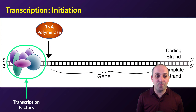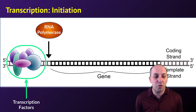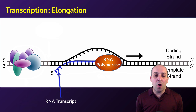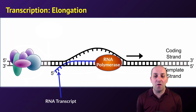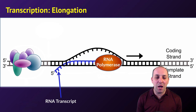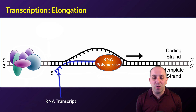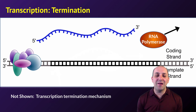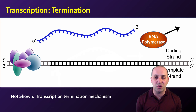Transcription happens in three phases. The first phase is known as initiation — transcription factors are present at the promoter and RNA polymerase attaches to them. During the elongation step, RNA polymerase moves along the gene and produces an RNA transcript that is complementary in sequence to the template strand of the DNA molecule. Just like in DNA replication, the new nucleotide strand has to be made in the five prime to three prime direction, meaning the template strand always runs three prime to five prime. During the termination step, RNA polymerase leaves the gene and the transcript is released from the DNA template.